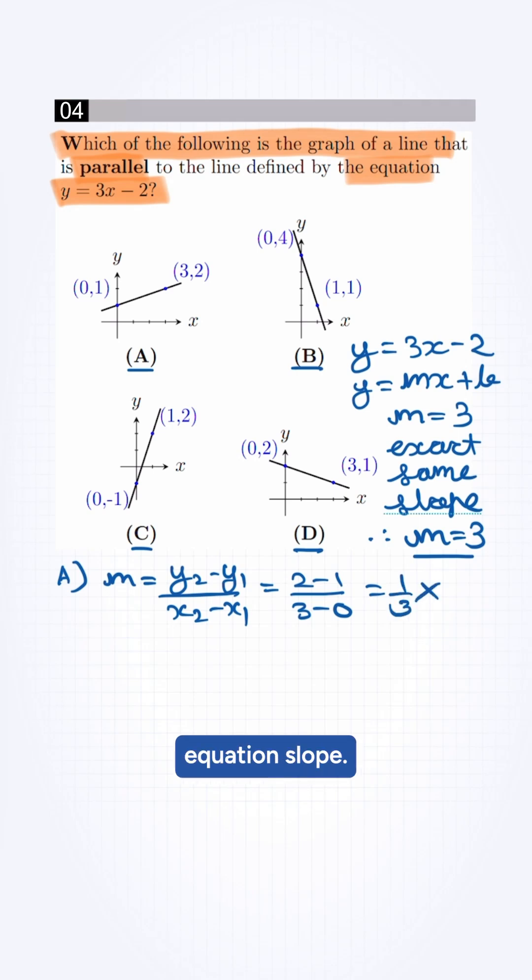For B, m is equal to 1 minus 4 by 1 minus 0, which is minus 3 by 1, which is minus 3. This also doesn't match.